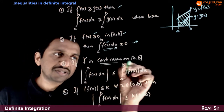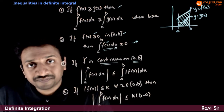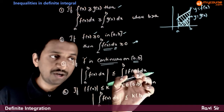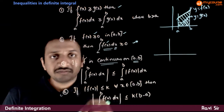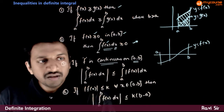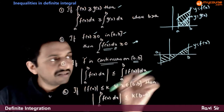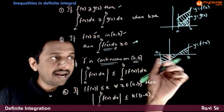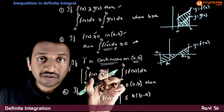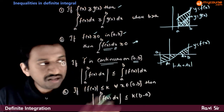Next, if f is continuous on the closed interval [a, b], then the mod of the integration from a to b of f(x)dx is always less than or equal to the integration from a to b of mod f(x)dx. That is, if you have a function which goes like this — with a on the left and b on the right — and this is y = f(x), then the integration from a to b of f(x)dx is the algebraic sum of the positive and negative areas. If the negative area is a1 and the positive area is a2, this integral equals minus a1 plus a2.